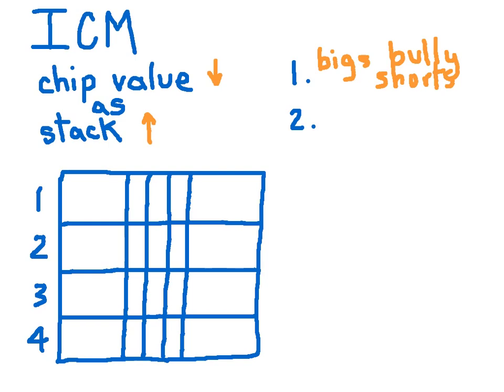But because of ICM, it's mathematically, not just psychologically appropriate, but mathematically appropriate to put pressure on short stacks, because they have to call tighter, because their chips are worth so much more than the chips you're risking to knock them out.